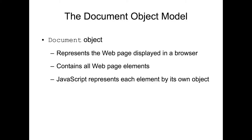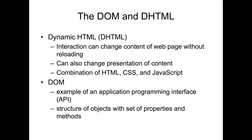JavaScript represents each element by its own object. By modifying the DOM, JavaScript can create dynamic HTML (DHTML) because the interaction can change content of the web page without reloading, and it can also change the presentation of the content. Basically, DHTML is a combination of HTML, CSS, and JavaScript. DOM can also be an example of an Application Programming Interface (API) — it is a structure of objects with a set of properties and methods.